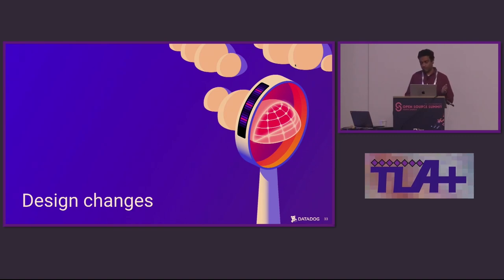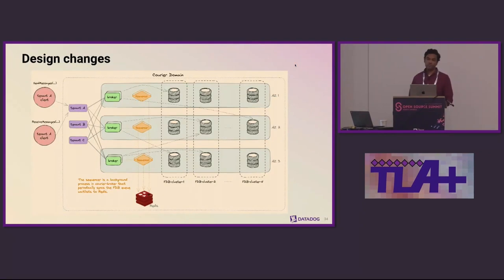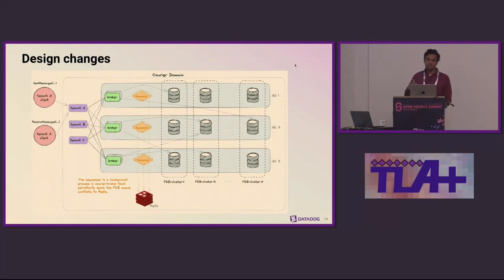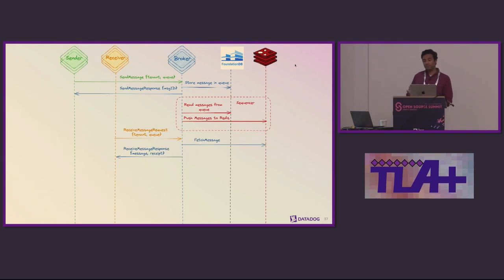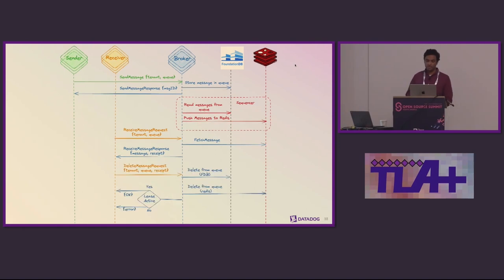To work around these issues, I introduced another process called a sequencer. The sequencer periodically scans for undelivered messages in FoundationDB and pushes them to Redis. Then when the broker gets a receive-message request, it now goes to Redis to get a message rather than FoundationDB. This moves all the competing consumers to Redis rather than FoundationDB, and FoundationDB becomes more or less a KV store. The updated sequence diagram shows: send messages still work the same; the sequencer reads from FoundationDB and pushes to Redis; receive-message requests fetch from Redis; and delete messages delete from FoundationDB and from Redis if a lease is active.